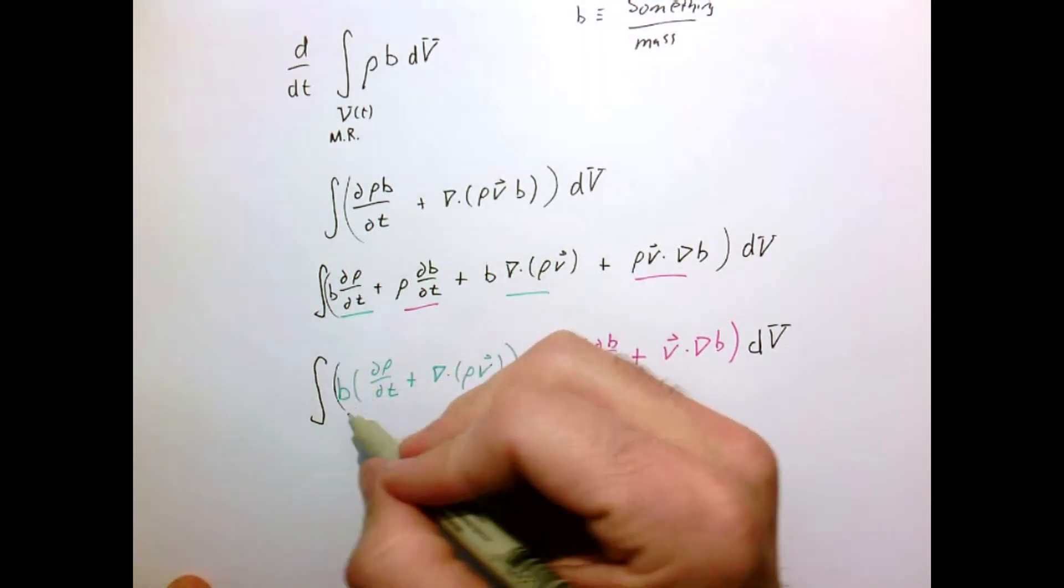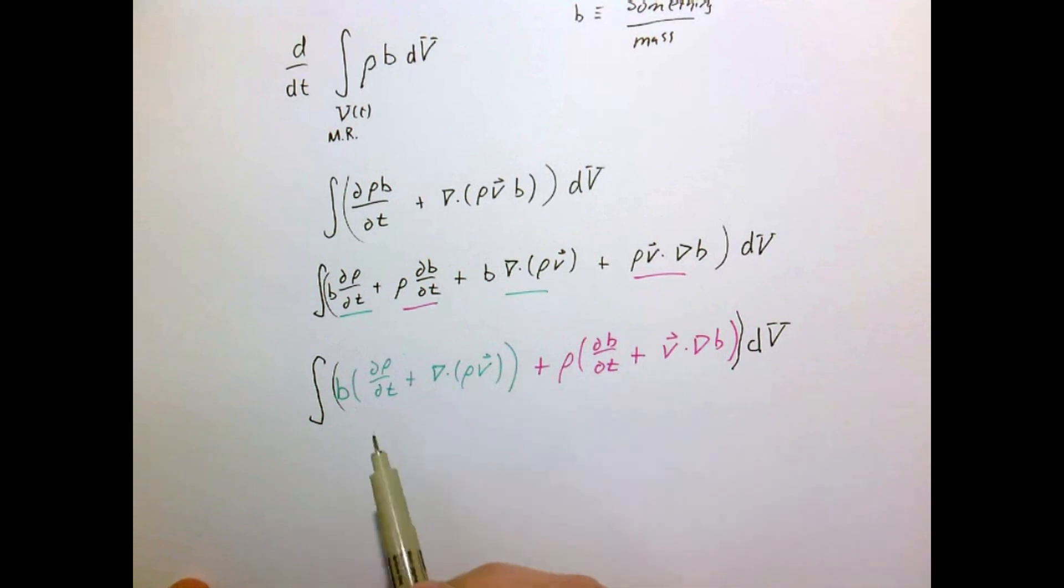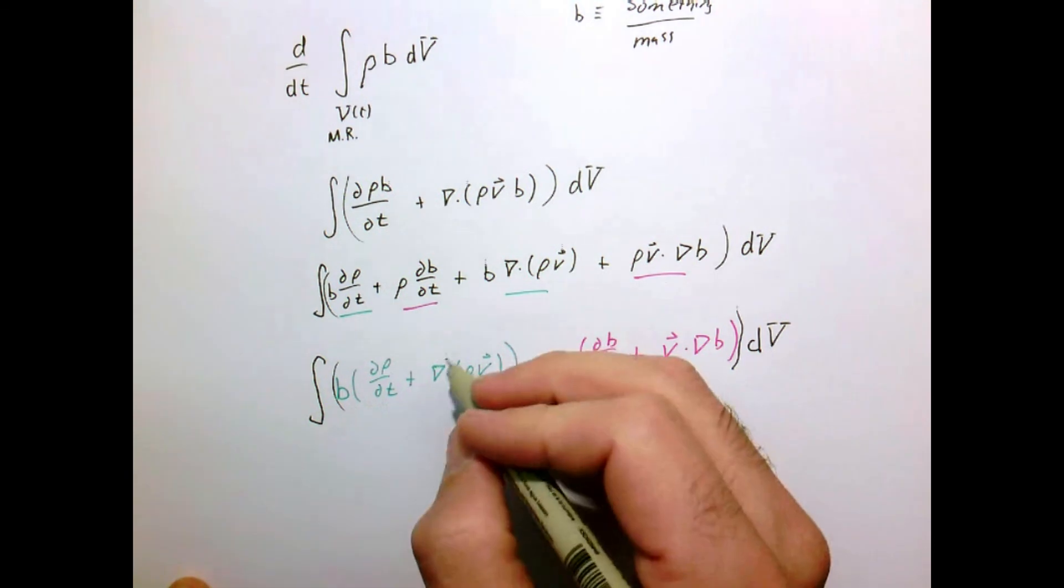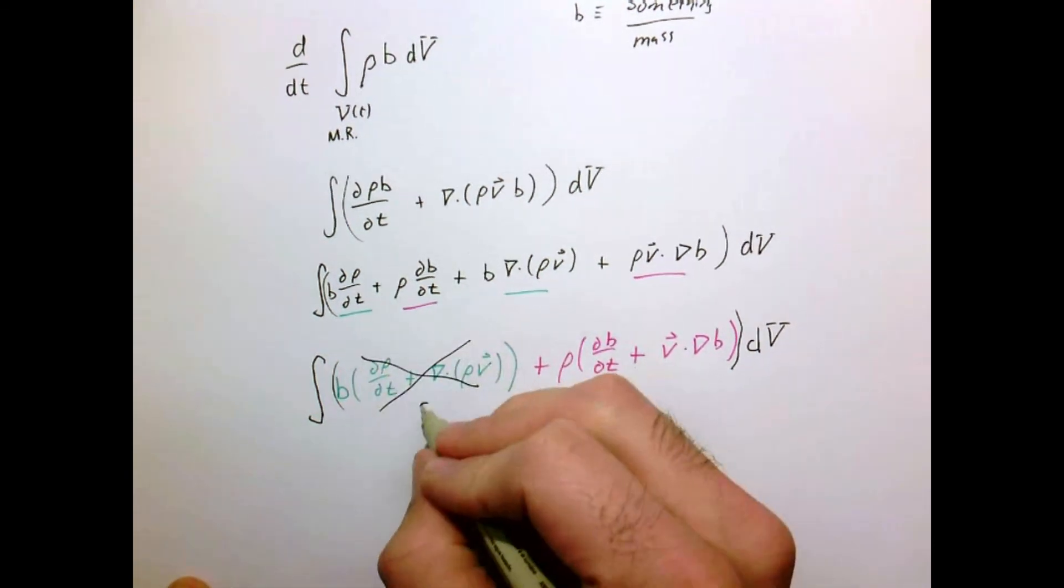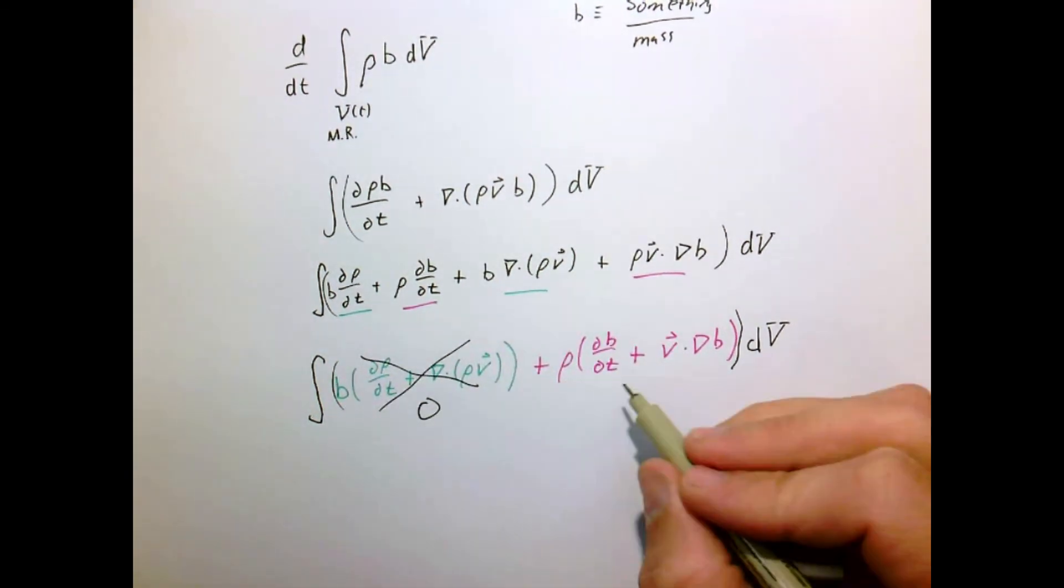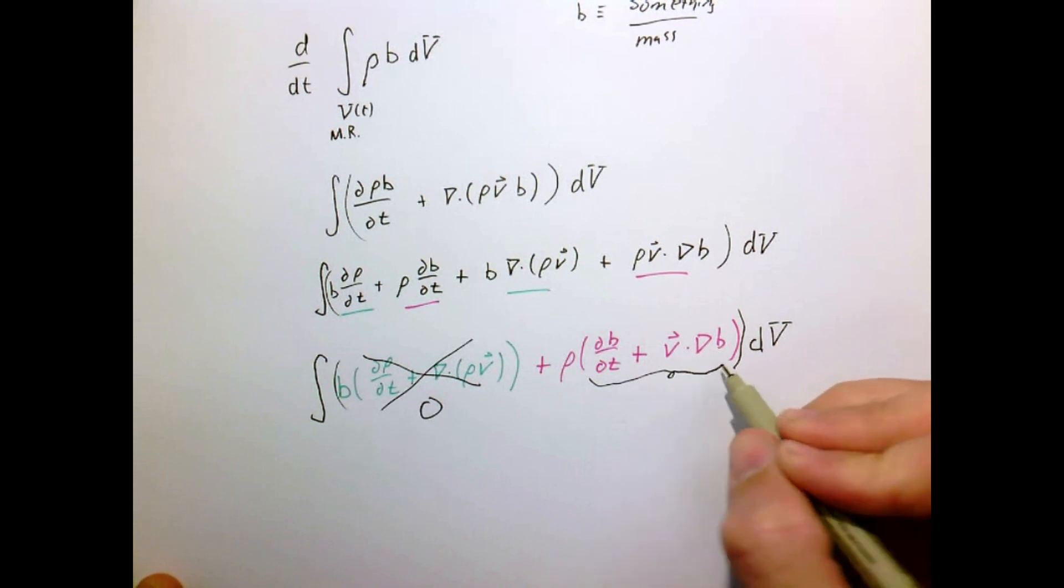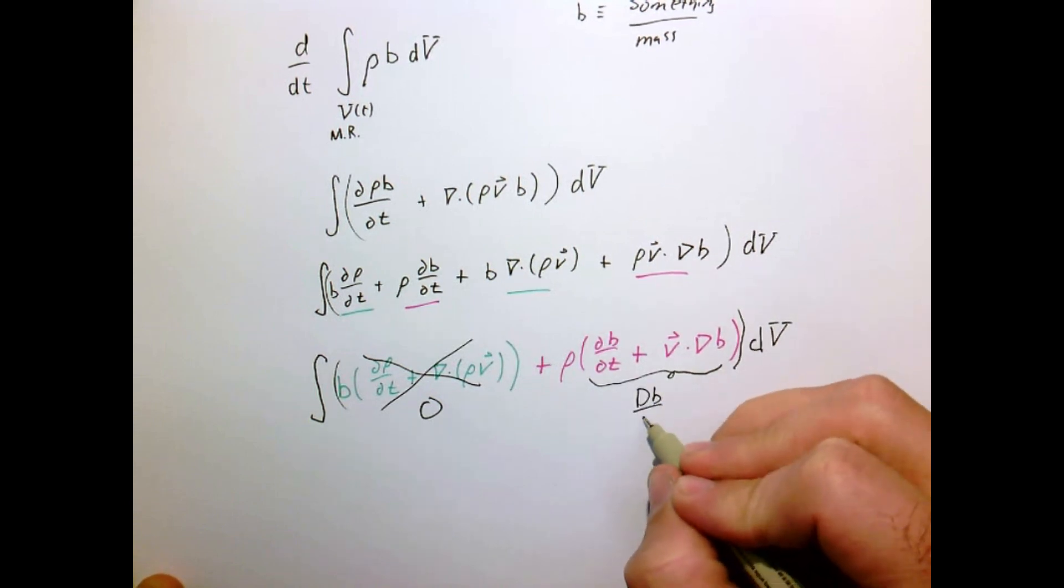So now I've grouped my terms together, denoted in color here. If I look at this equation inside the parentheses, this is zero by conservation of mass. So I can cross that out as a big old zero. And this term here is nothing more than the material derivative.